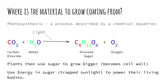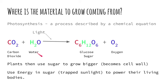Photosynthesis can be described as a chemical equation. It can be described as carbon dioxide and water being combined, capturing the light energy, and forming a molecule of sugar and a molecule of oxygen. And you can see that matter is not destroyed — the carbon here is the same carbon over here, and the oxygen atoms here are the oxygen atoms here.